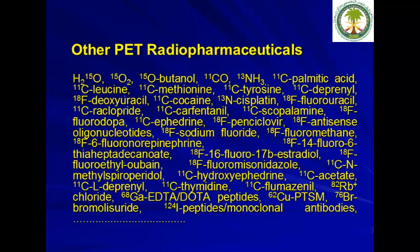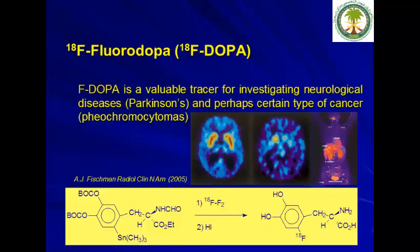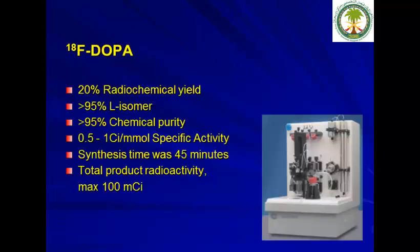Therefore, a variety of PET radiopharmaceuticals were developed. We will focus on those with extensive human use, limited human use, and promising but no human use. The next PET radiopharmaceutical is Fluorodopa. It is produced using an FDA-approved method, but unfortunately produces low specific activity. The yield is very low — less than one curie per millimole — though an automated system can be used to produce it. Nowadays, a new method can produce it in higher quantity and it is non-carrier-added.